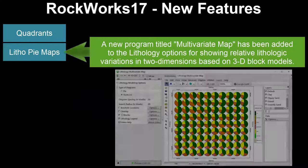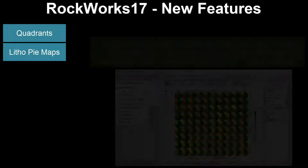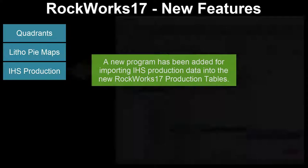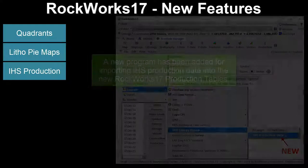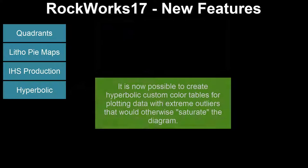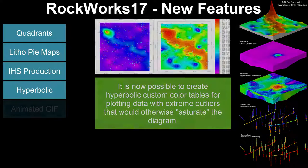A new program titled Multivariate Map has been added to the lithology options for showing relative lithologic variations in two dimensions based on 3D block models. A new program has been added for importing IHS production data into the new RockWorks 17 production tables. It is now possible to create hyperbolic custom color tables for plotting data with extreme outliers that would otherwise saturate the diagram.